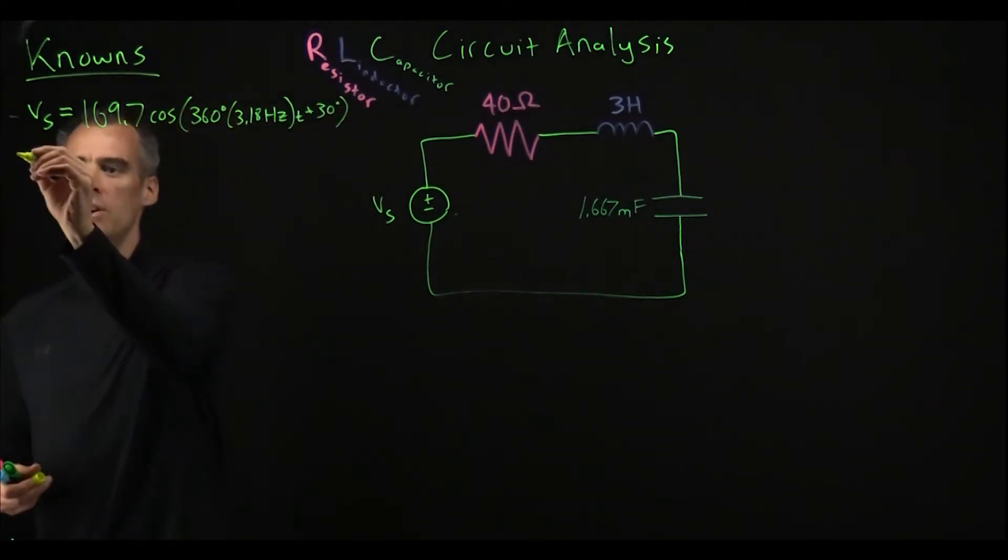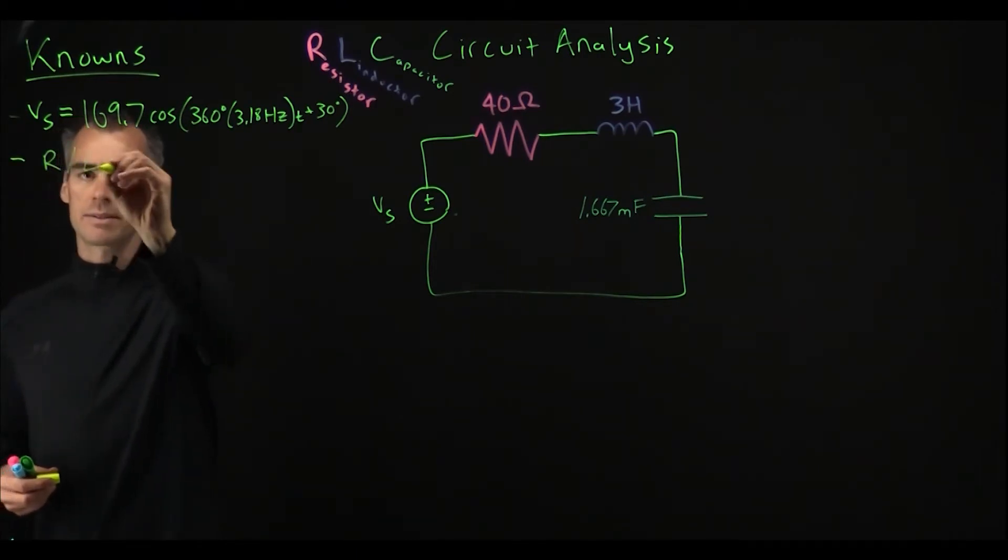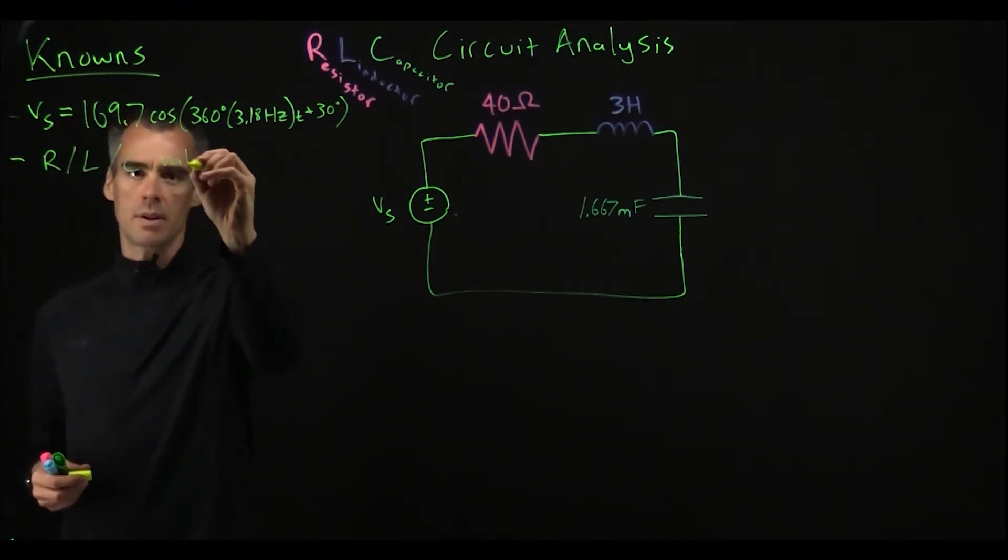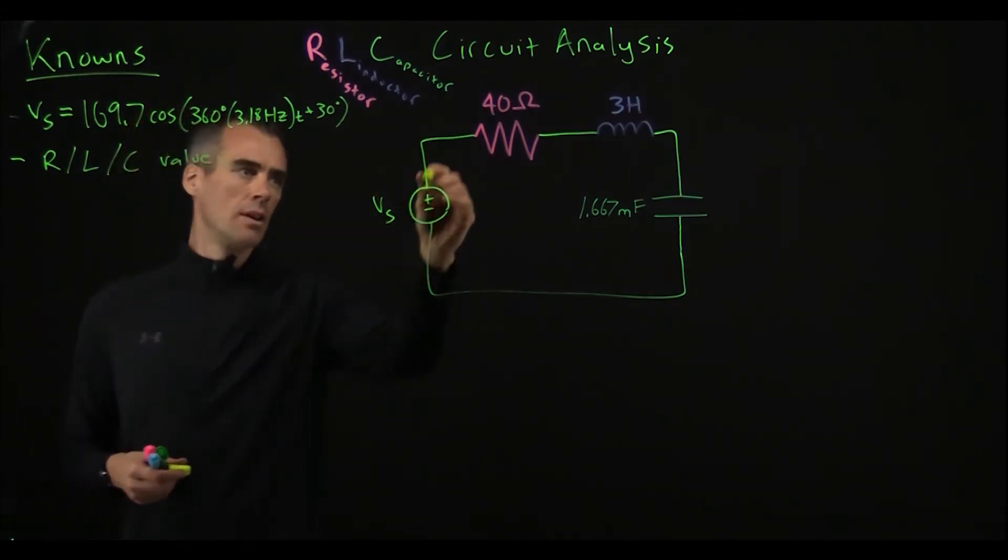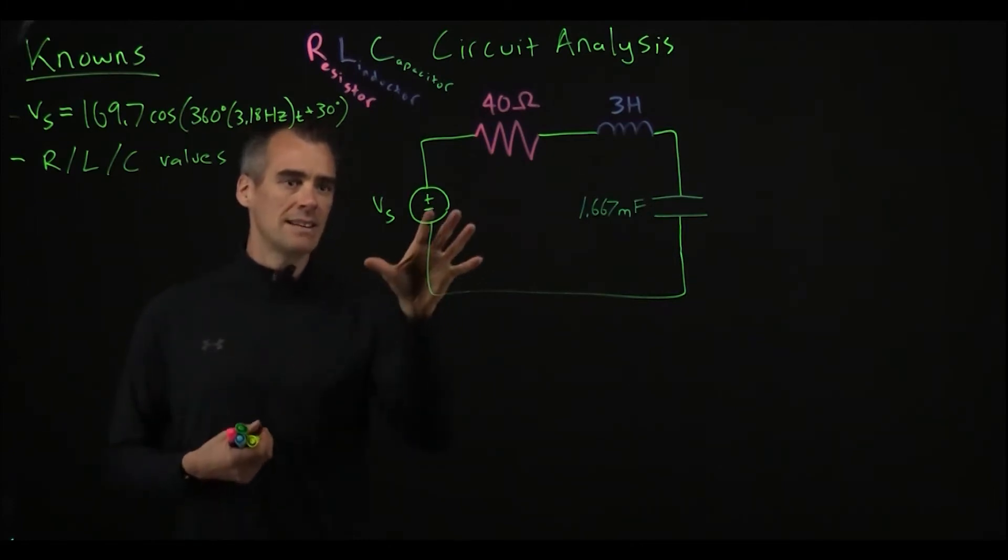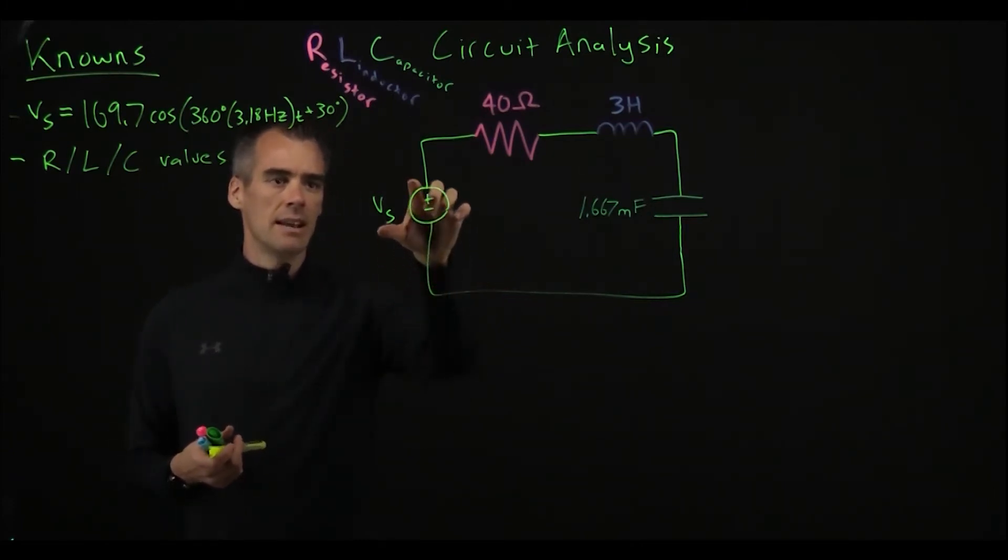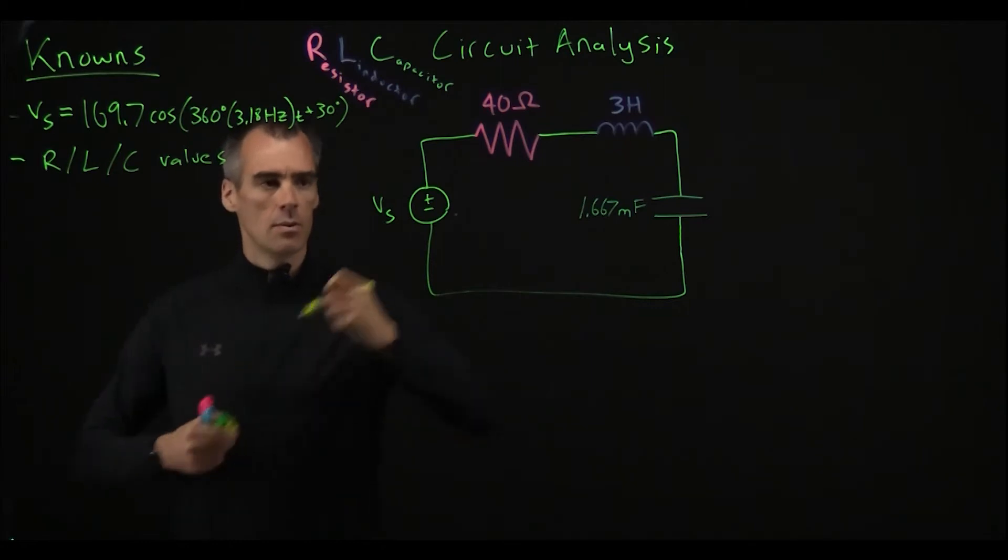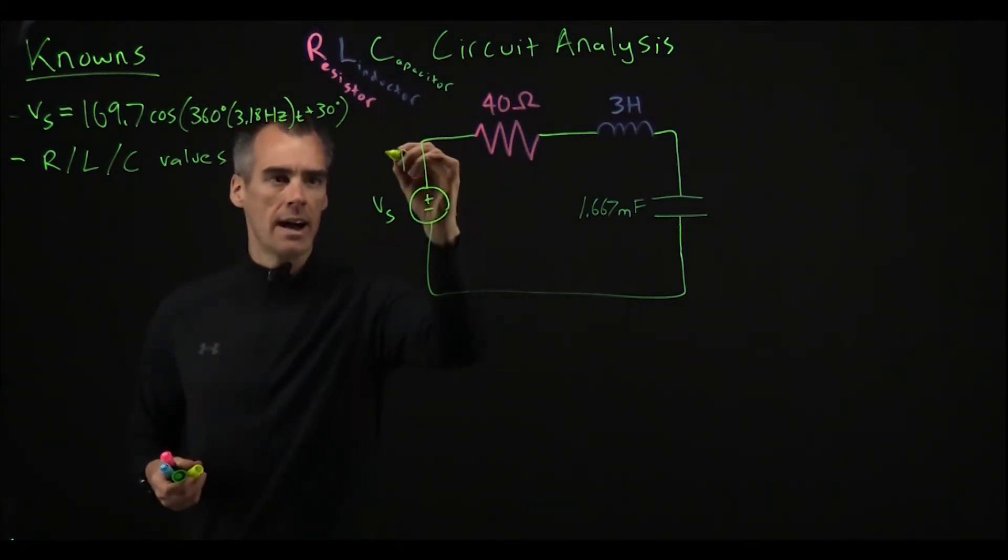So that is one known and the other known is going to be our RLC values, which are given up here. And now we move on to our unknowns. What we're going to try and find, particularly in this circuit, is going to be IS. We are looking for IS, that current that's running through this.